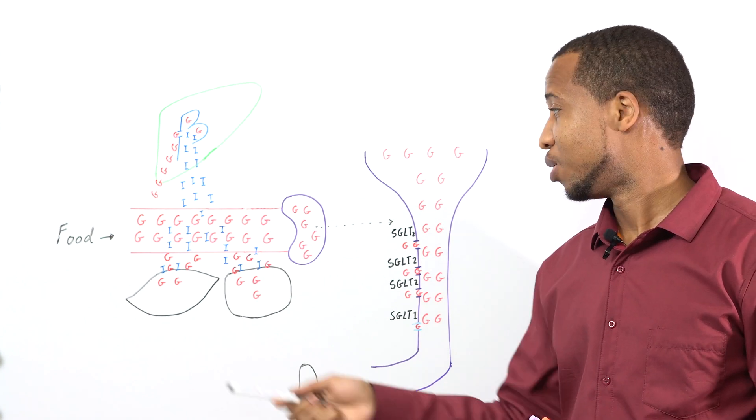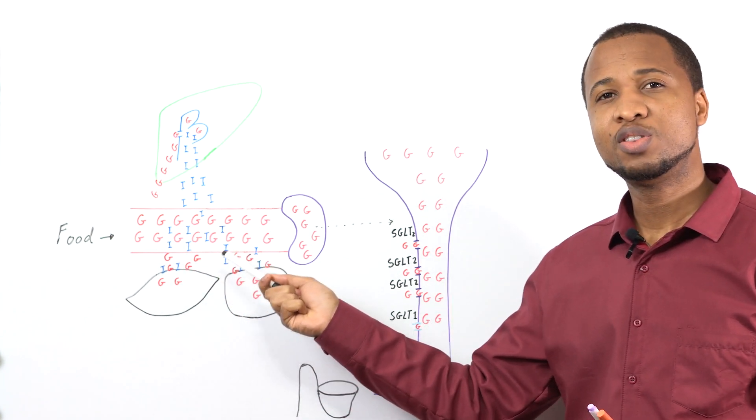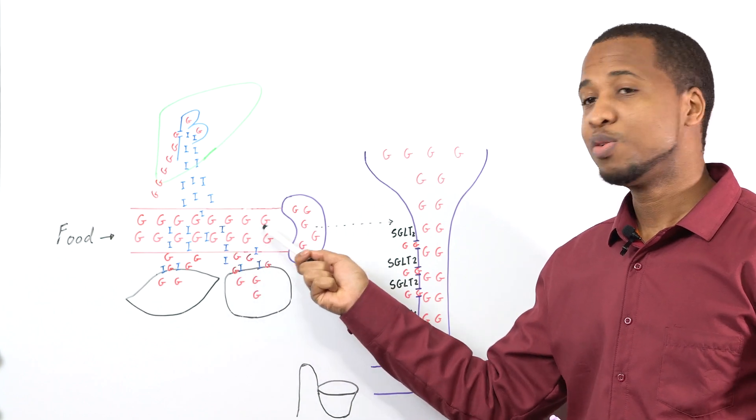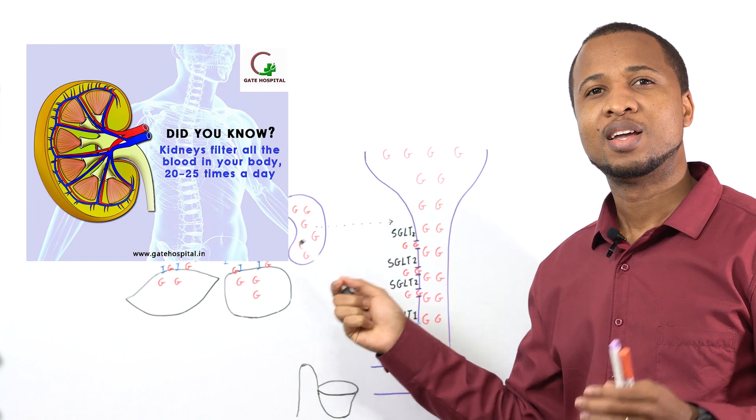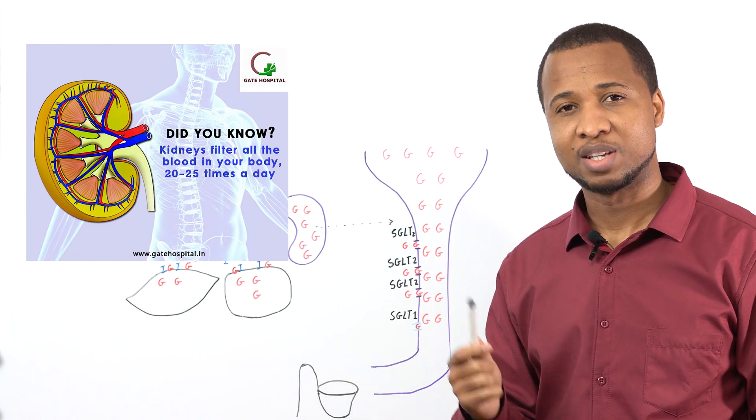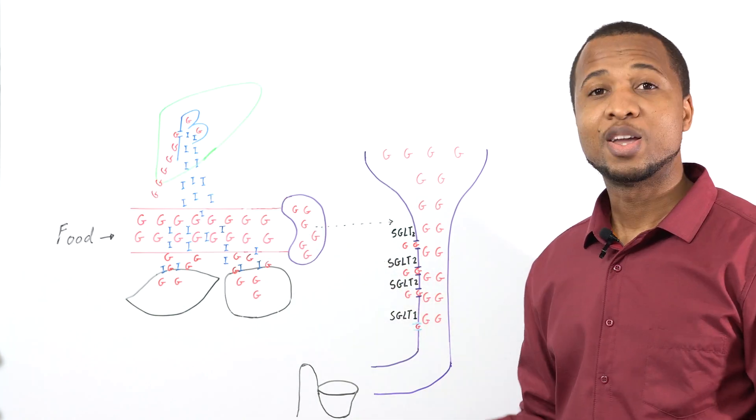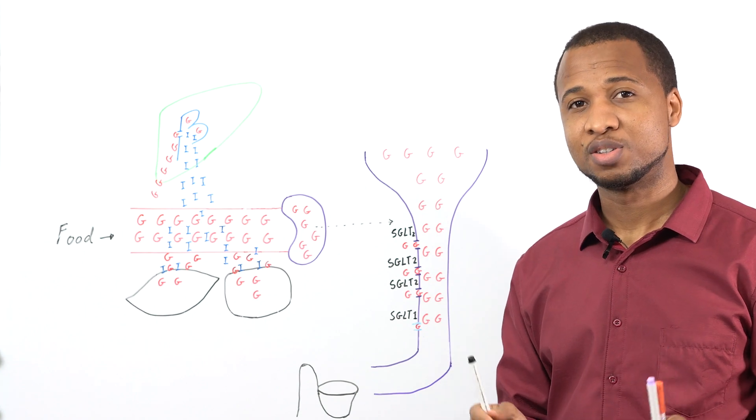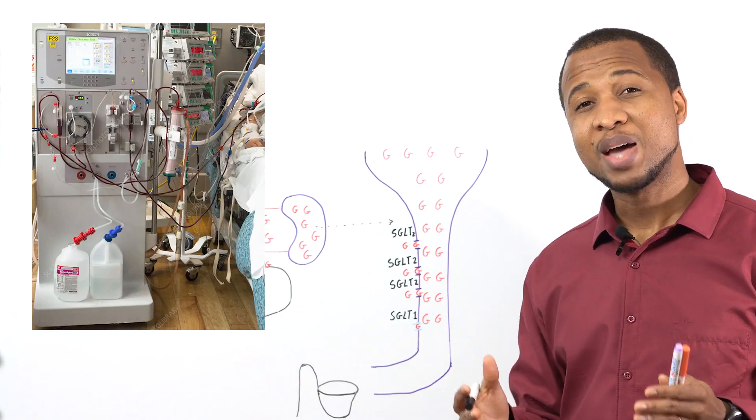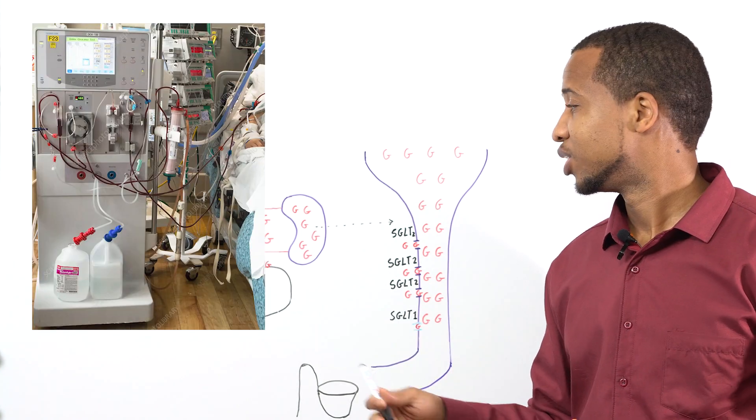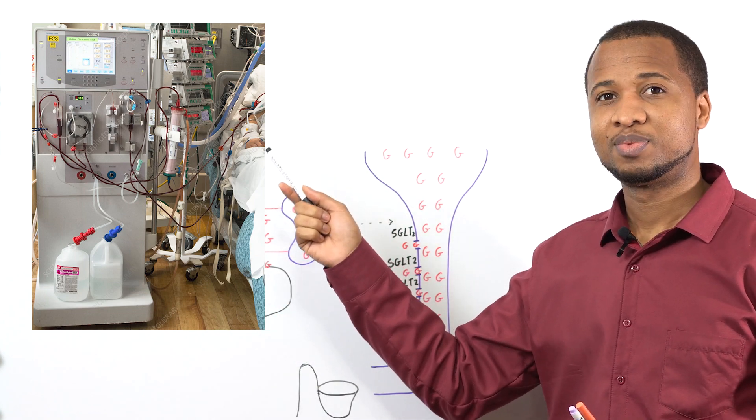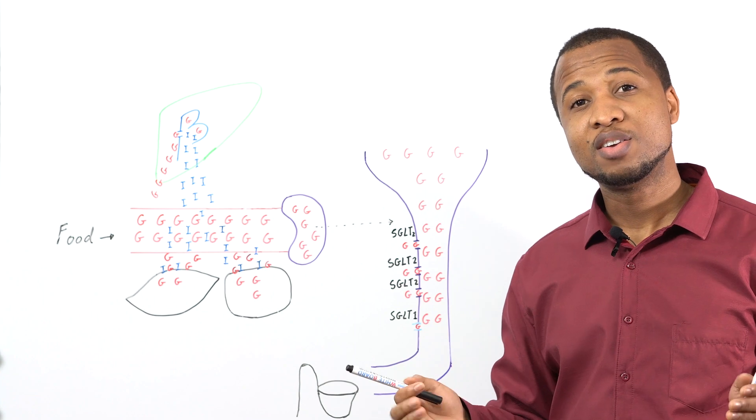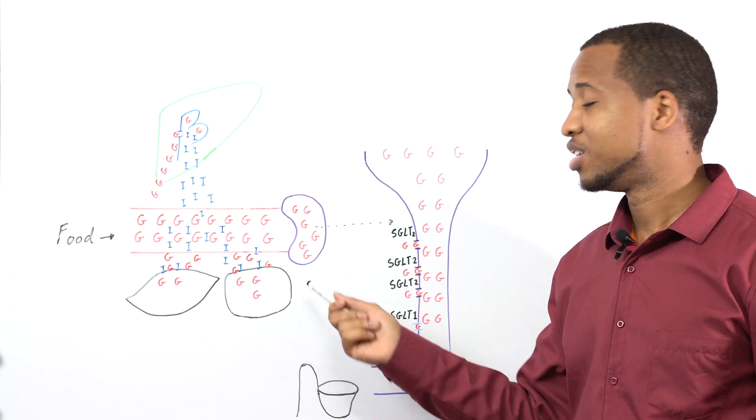But what you might not know is that this blood, including the glucose in it, has to pass through the best filter in the world 20 to 25 times a day. Yeah, your kidneys are the best filters in the world. Now the best machines made to try to replace your kidneys, they look like that and they cannot even do 10% of the job your kidneys can do.